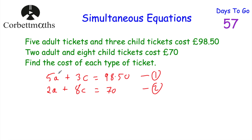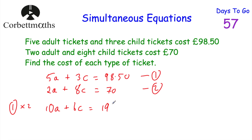I've numbered them equation 1 and equation 2. You could cancel out the A's or the C's — it's up to you. I'm going to cancel the A's this time. Multiplying equation 1 by 2 gives us 10A + 6C = 197. Then multiplying equation 2 by 5 also gives us 10A: so 10A + 40C = 350.